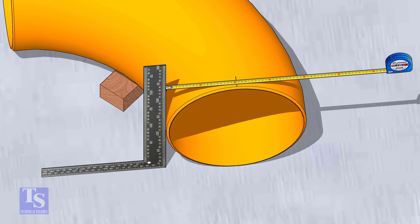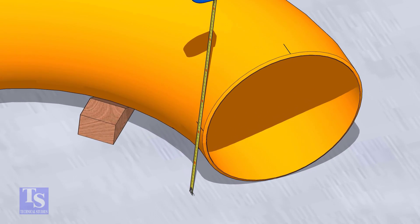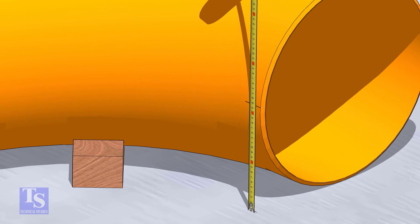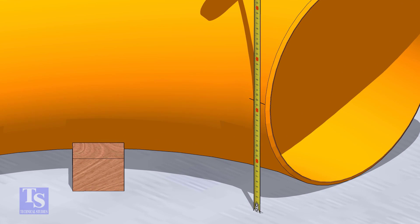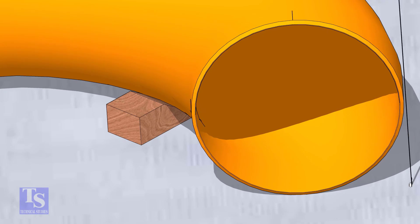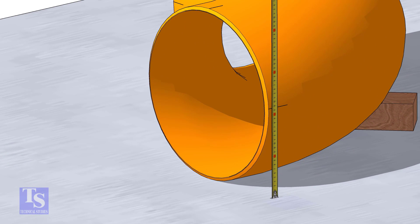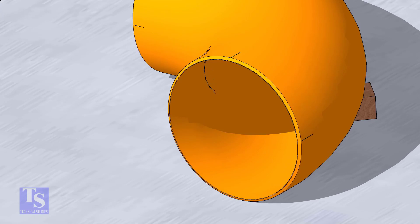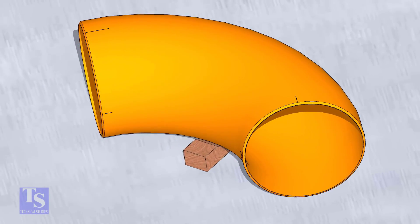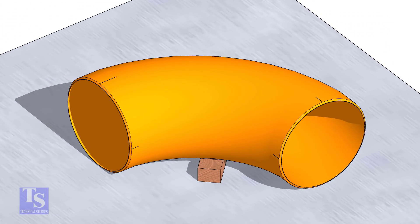Mark half diameter from the plate to the elbow on both sides as shown. Repeat the process and mark the quarters on the other end of the elbow. Rotate the elbow and mark the bottom side quarter also.